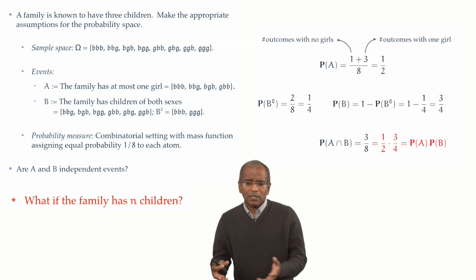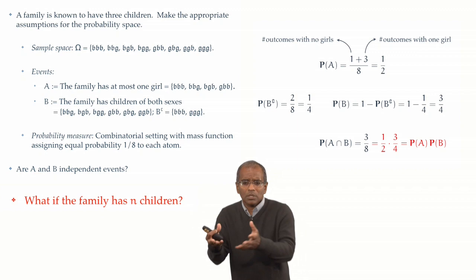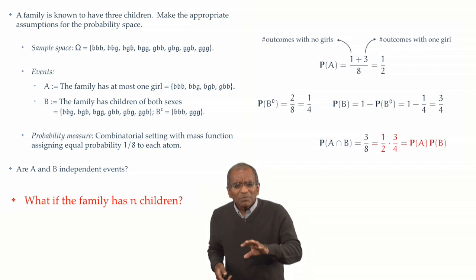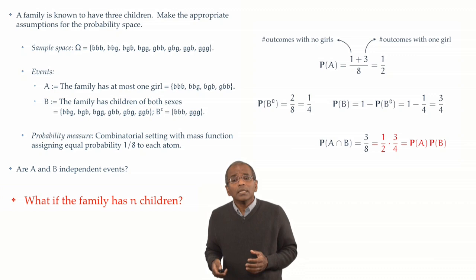And define the events A and B just as given here. That A is the event that the family has at most one girl, B the event that the family has children of both sexes. Are A and B independent? Well, naturally, from this example, I would be tempted to say, yeah, sure, of course. It makes clear that, in fact, they are independent, though the structure looks a little more complex now. But we should be a little cautious. So let's go ahead and run an analysis through one more time, this time for a family with n children.